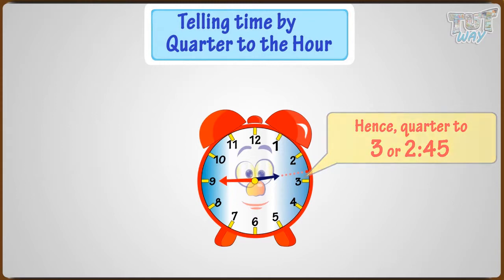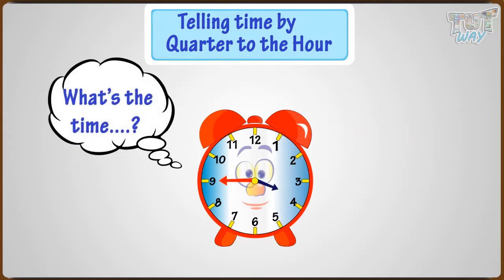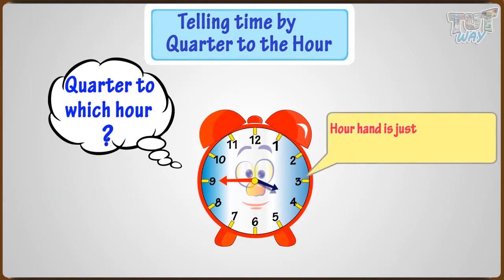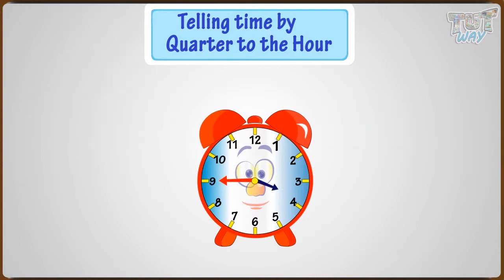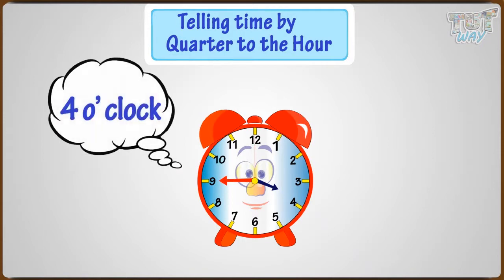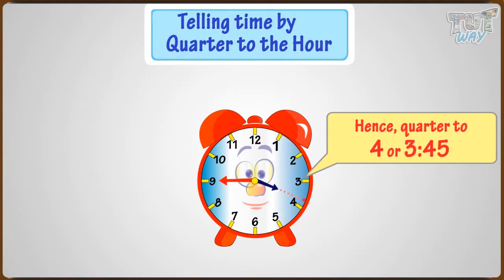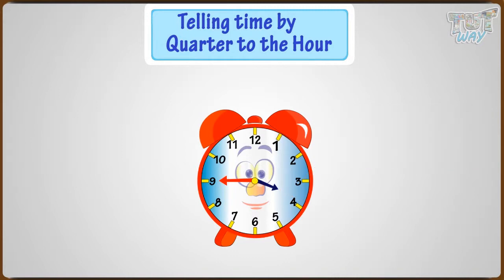Now let's try to figure out what's the time in this analog clock. The minute hand is pointing at nine, so it's quarter to the hour. But quarter to which hour? The hour hand is just a quarter away from four, so it's quarter to four. If the minute hand moves round one more quarter, it will be four o'clock. The hour hand is pointing three-fourths of the way past the current hour — see the dotted line. Hence, quarter to four, or three forty-five.